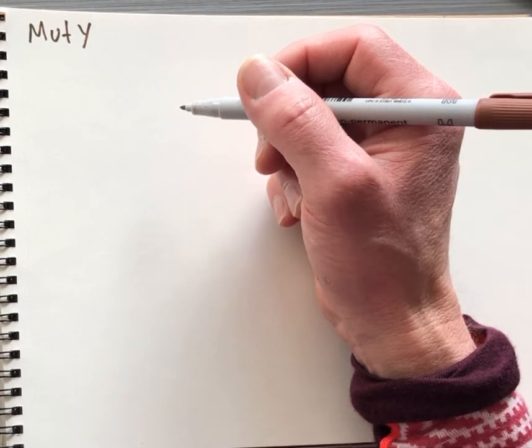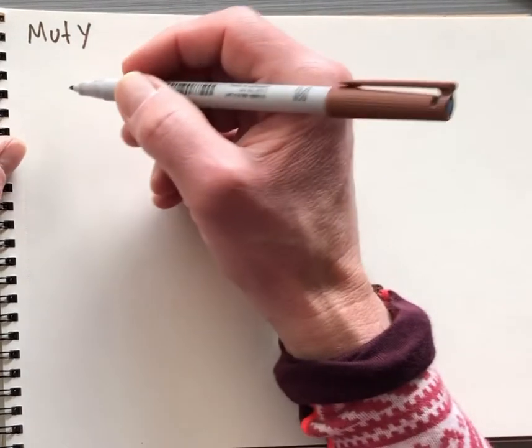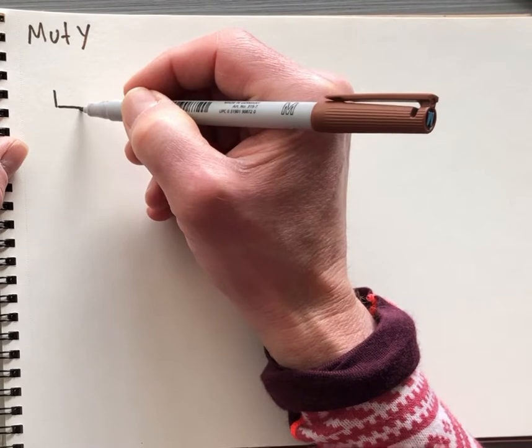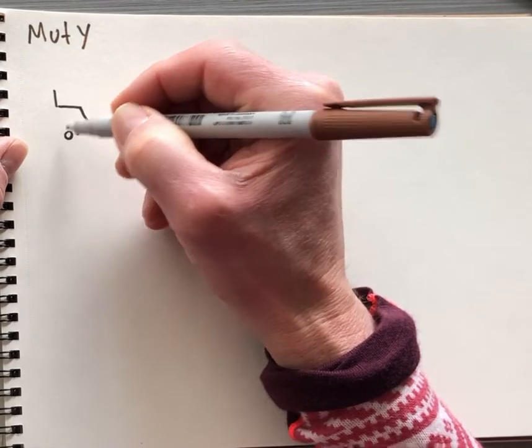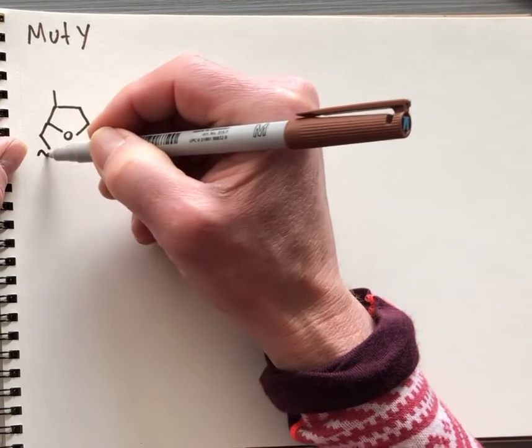This bond-breaking reaction is responsible for removing adenine from these OG:A base pairs. We'll zoom in on the covalent structure of the adenine nucleotide as it's located in DNA.